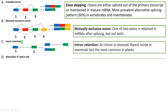The third type is called intron retention. Here, with two exons (exon 1 and exon 2), an intron is retained in the pre-mRNA rather than being removed. This is the rarest mode in mammals but very common in plants. Because the intron is retained, the continuity of the coding sequence is lost, possibly forming a non-functional protein, a partial polypeptide without a complete amino acid sequence, or a truncated polypeptide if a stop codon is present.